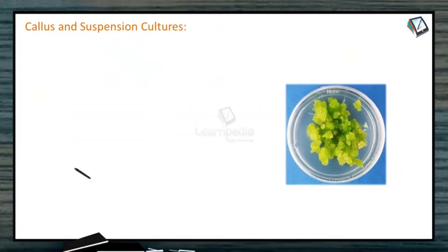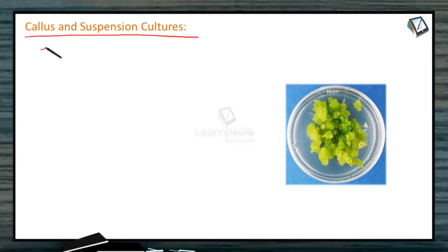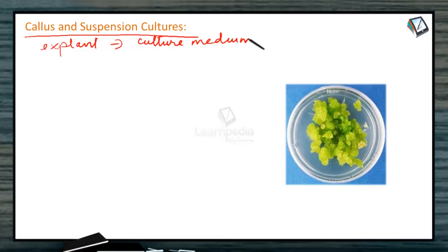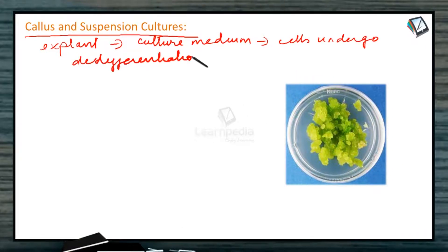The next topic is callus and suspension culture. What do we mean by callus? An explant is grown in a culture medium, and the cells undergo de-differentiation. This de-differentiation produces a mass of undifferentiated cells, which is called callus.